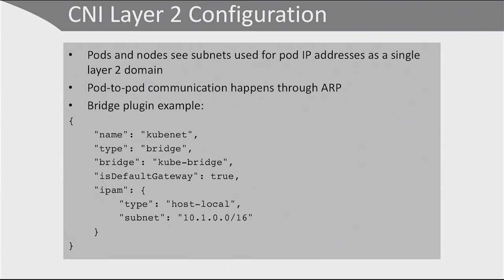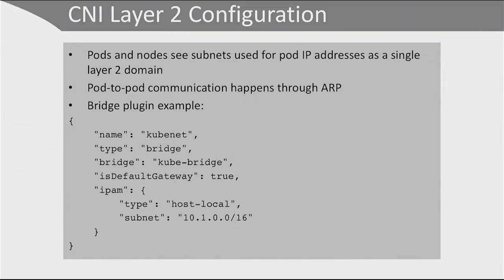You would use overlay networking if you need to create something that looks like software-defined networking. CNI layer 2 configuration can be quite easy — the pods and nodes see subnets used for pod IP addresses as a single layer 2 domain, as if computers are plugged into the same physical network. They communicate using ARP, the Address Resolution Protocol. In layer 2 networking you need a bridge plugin — for example, a configuration with name Kubenet, type bridge, the bridge set to kube-bridge, default gateway true, and IPAM configuration set to host-local with a subnet.